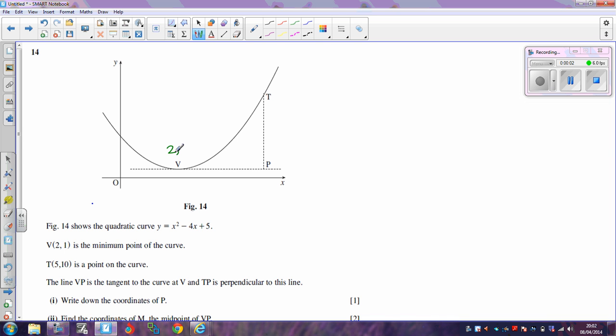We're told that V has coordinates 2, 1, and T has coordinates 5, 10. Which means that if we mark things on the x-axis, this is 5 on the x-axis, and this is 2 on the x-axis.